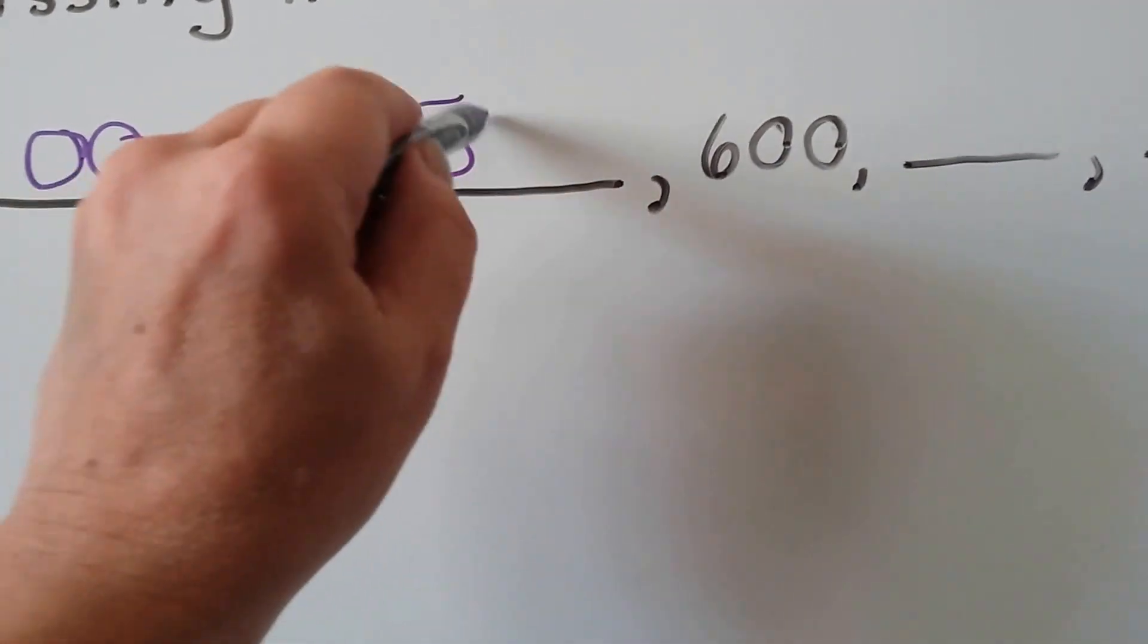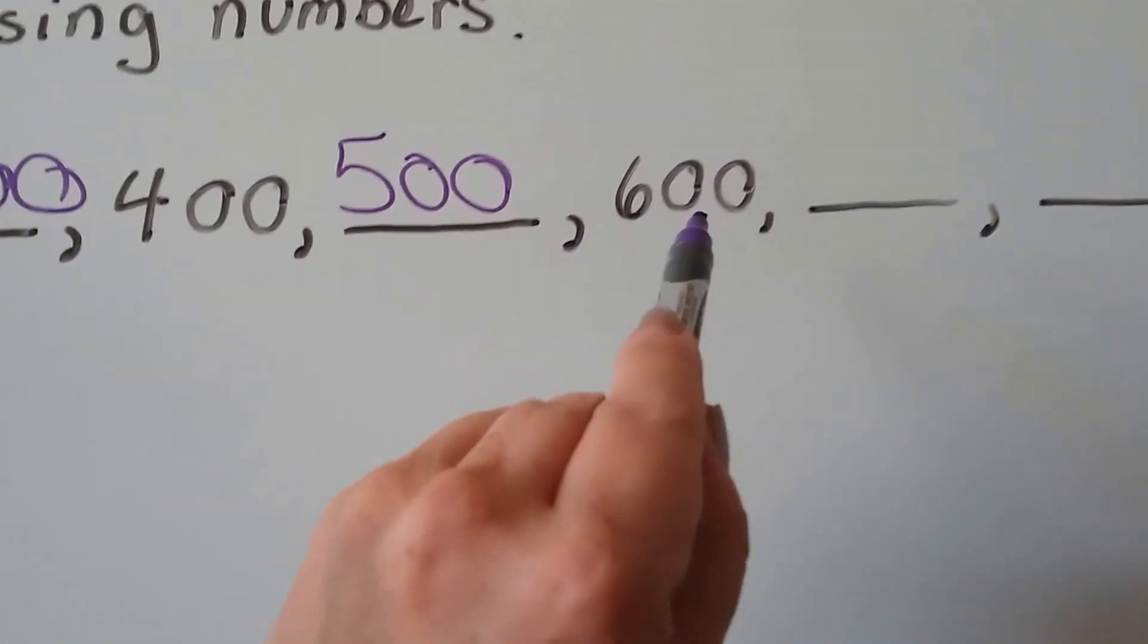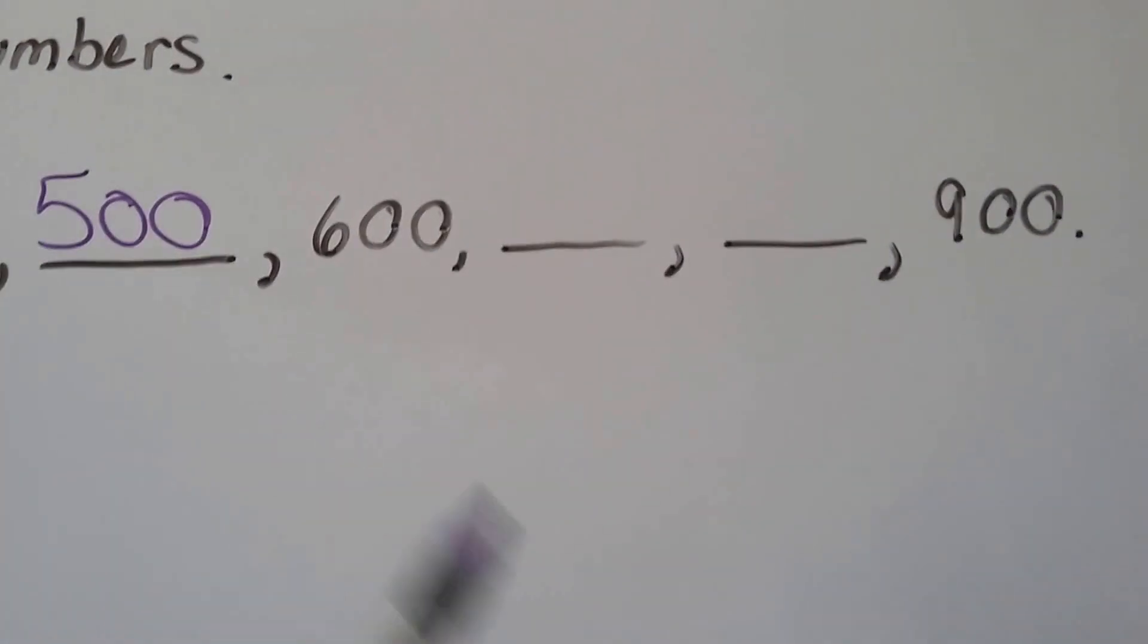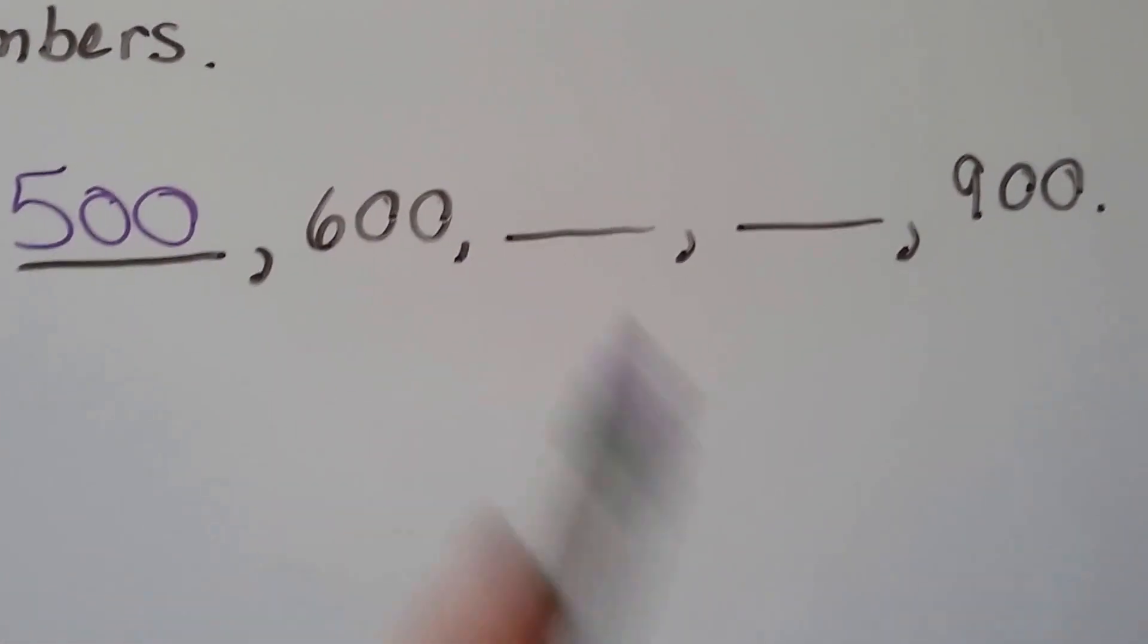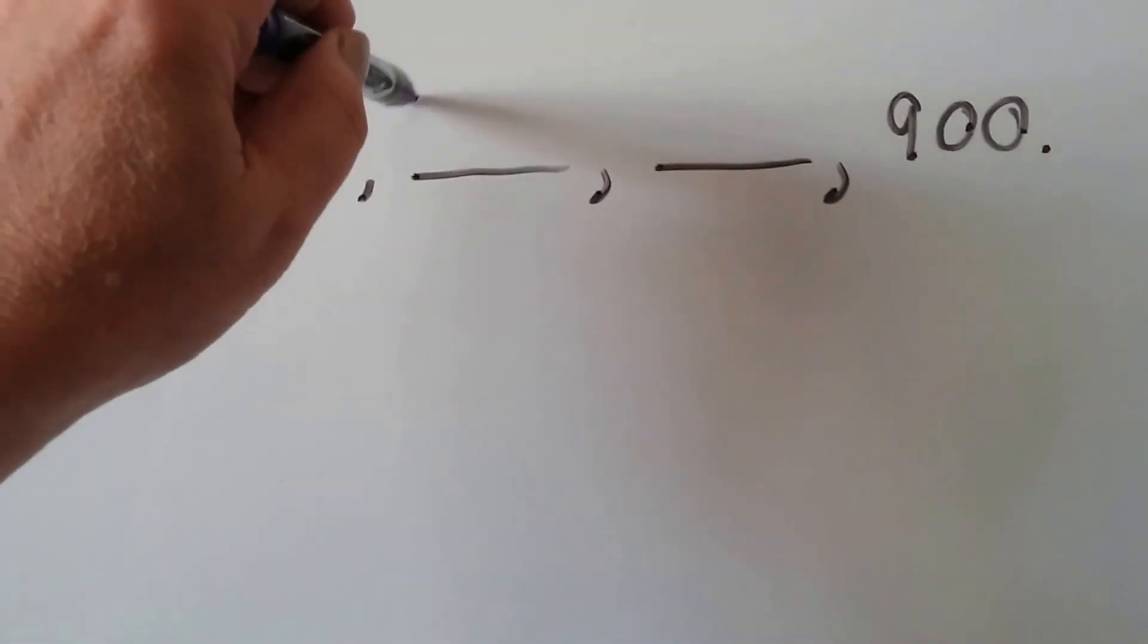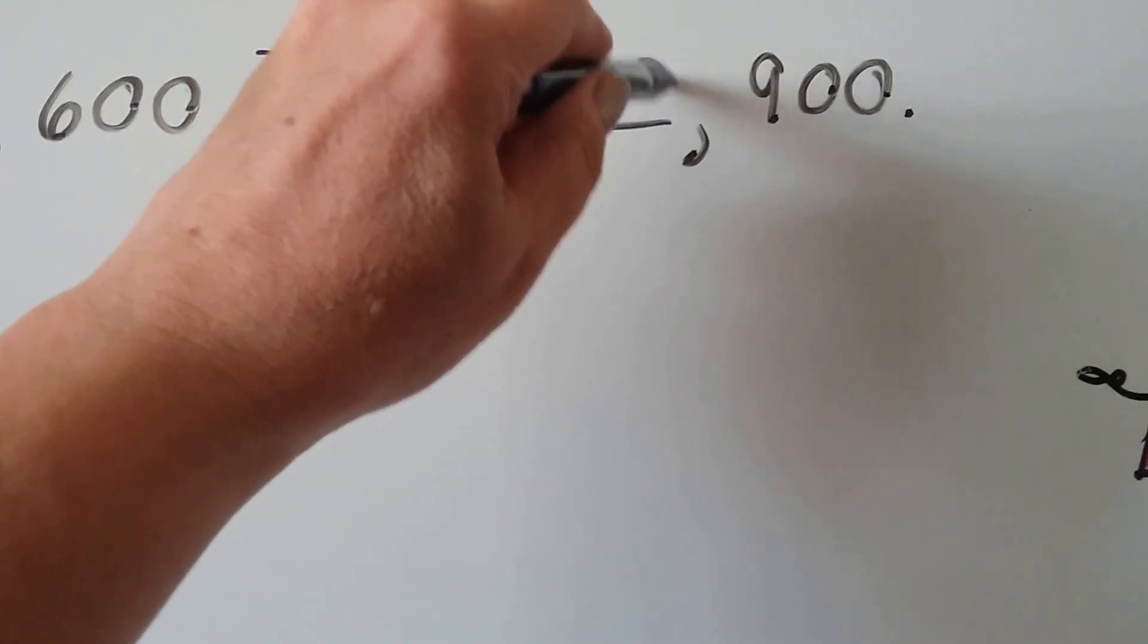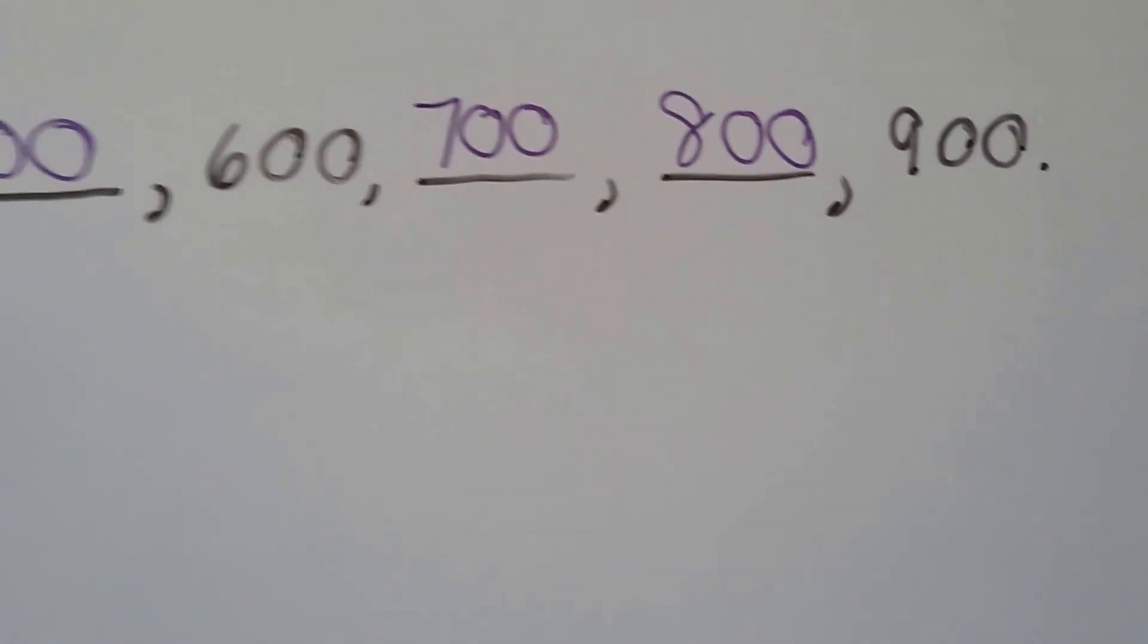What comes here? If you said 500, you're right. 600, something, something, 900. 500, 600, 700, then 800, then 900, right?